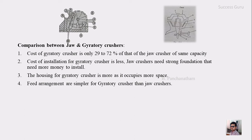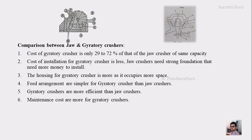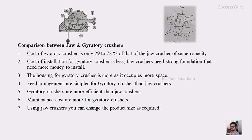The feed arrangement is simpler for the Gyratory Crusher, and the Gyratory Crusher is more efficient than the Jaw Crusher. Maintenance cost is higher for the Gyratory Crusher, whereas the Jaw Crusher does not need much maintenance once installed. Using a Jaw Crusher, you can change the product size as per your requirement and adjust it whenever needed. These are the key comparisons between the Jaw Crusher and the Gyratory Crusher.